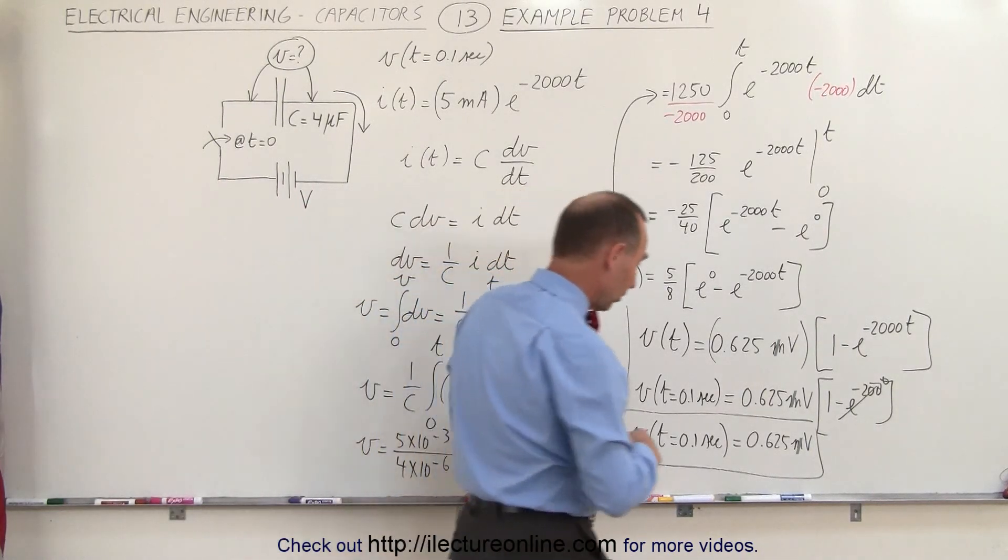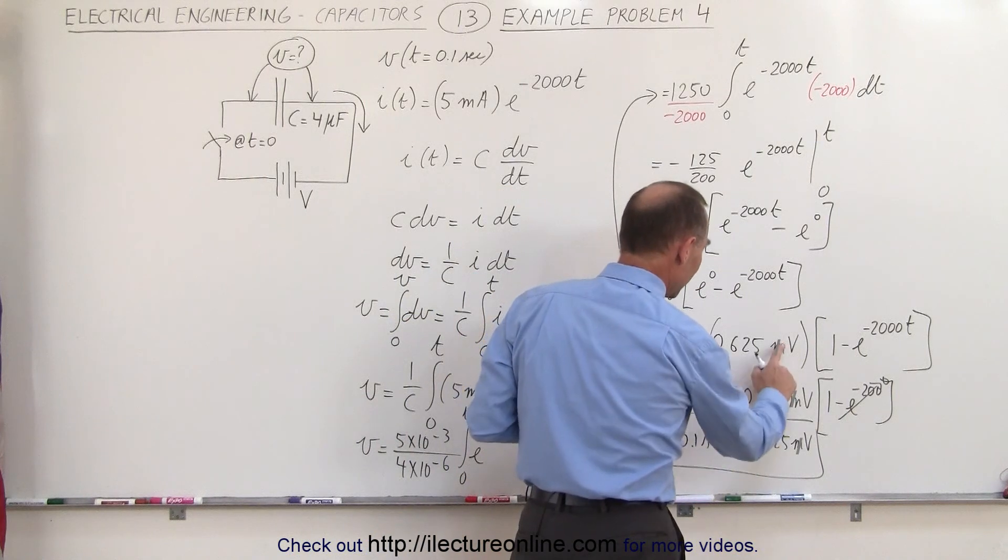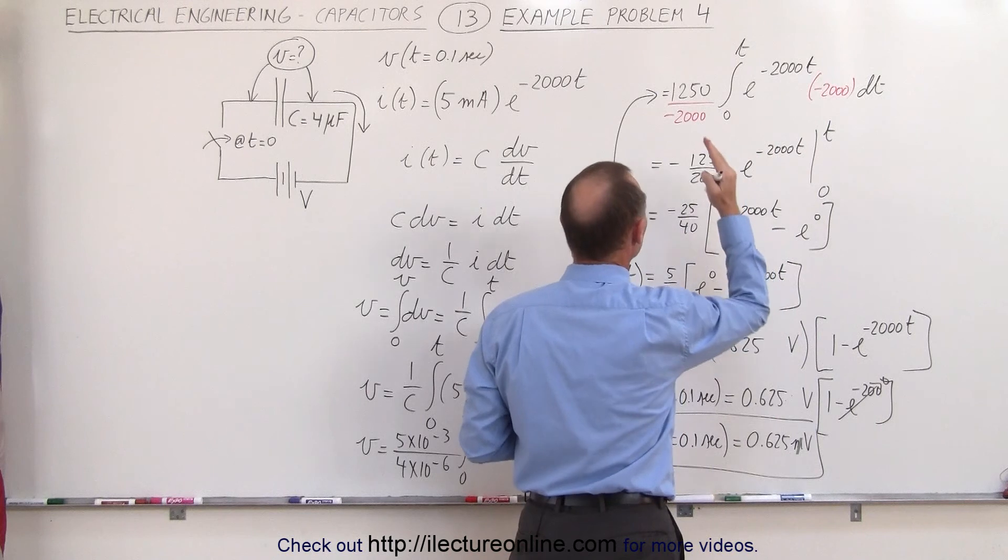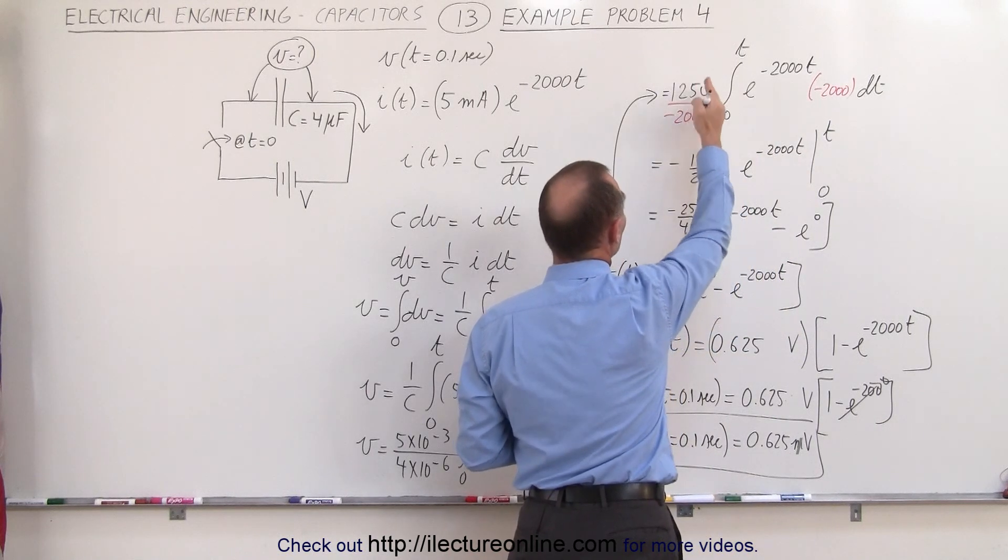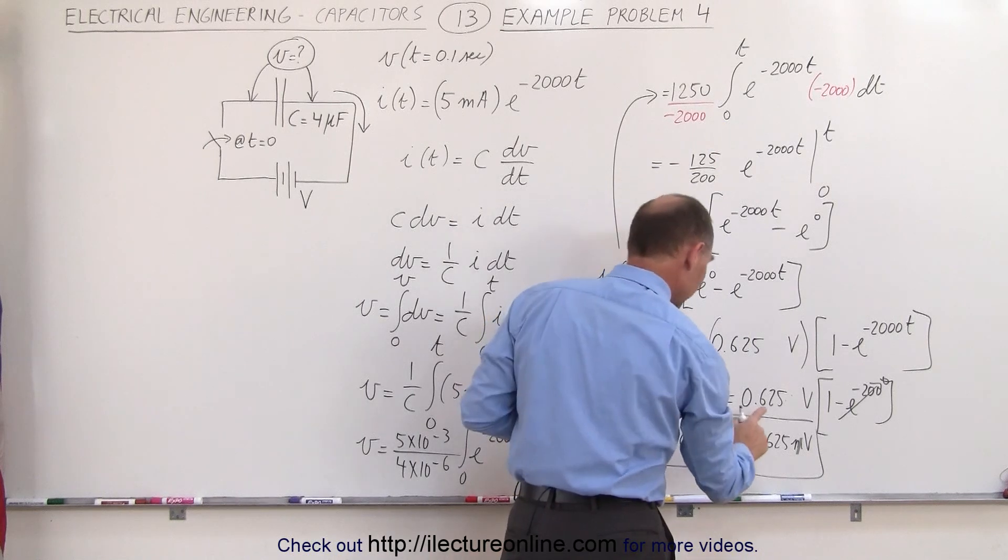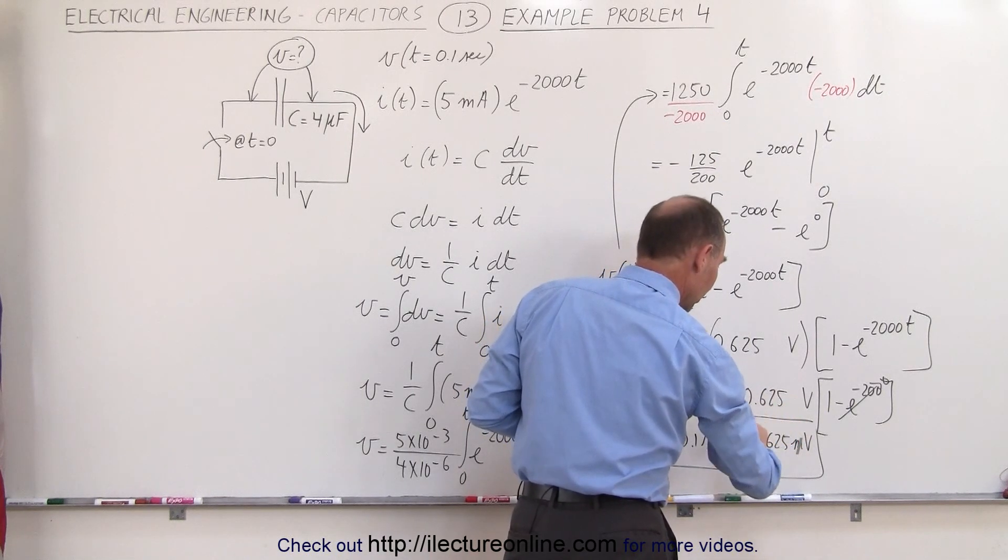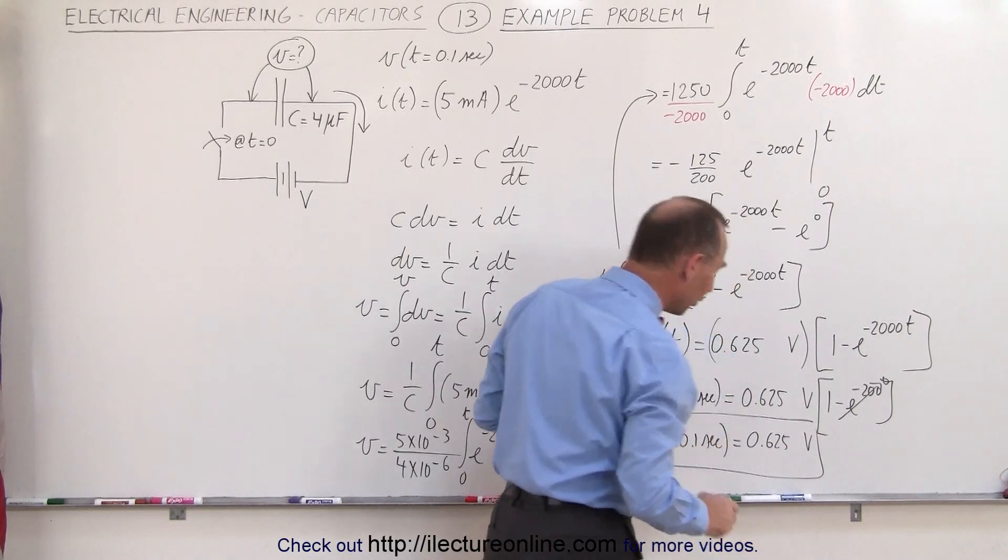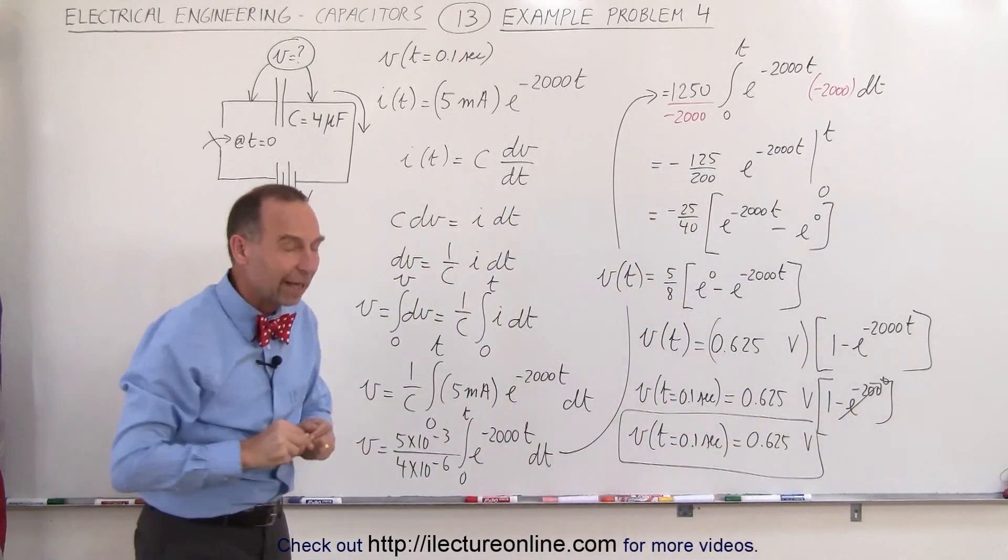I just noticed that this probably should not have been millivolts, but volts. The reason was, when I divided by 2000, I already took that into account, because this was going to be in milliamps divided by 2000, so instead of 0.625 millivolts, it's actually 0.625 volts, and that would then be the correct answer for that.